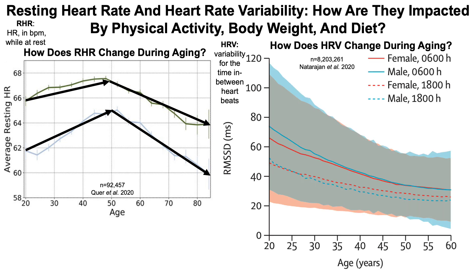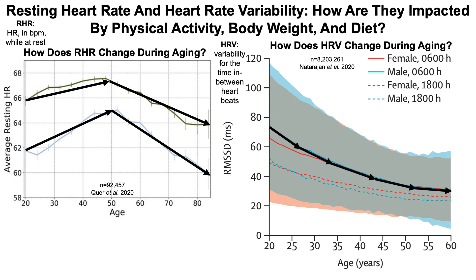What about HRV? How does that change during aging? This is from a much larger study of 8.2 million plus subjects, looking at the RMSSD — the root mean squared of successive differences — one metric for measuring heart rate variability, plotted against age from 20 to 60 years. Heart rate variability is somewhere in the 70s for a 20-year-old, then declines to about half that in 60-year-olds for both men and women, whether measured at 6 in the morning or 6 at night.